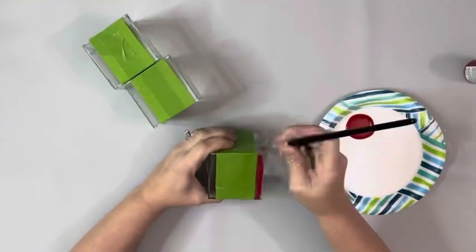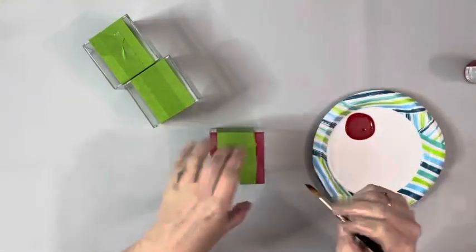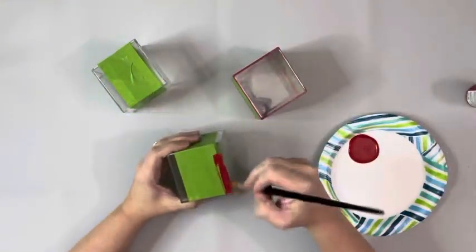After I had all three of them covered with the tape, I took Tuscan Red Chalk Paint by Folk Art and painted above the tape and below the tape. I did two coats of that.